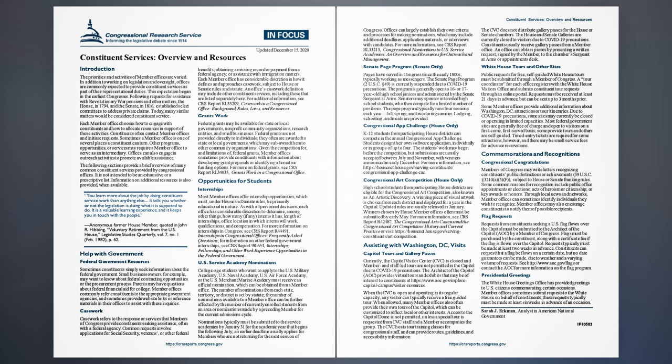U.S. Service Academy Nominations. College-age students who want to apply to the U.S. Military Academy, U.S. Naval Academy, U.S. Air Force Academy, or the U.S. Merchant Marine Academy must receive an official nomination, which can be obtained from a member office. The number of nominations from each state, territory, or district is set by statute, and can be further affected by the number of currently enrolled students from an area or nominations made by a preceding member. Nominations typically must be submitted to the service academies by January 31 for the academic year beginning the following July; an earlier deadline usually applies for members not returning for the next session of Congress. Offices can largely establish their own criteria and processes for nominations. For more information, see CRS Report RL 33213, Congressional Nominations to U.S. Service Academies: An Overview and Resources for Outreach and Management.